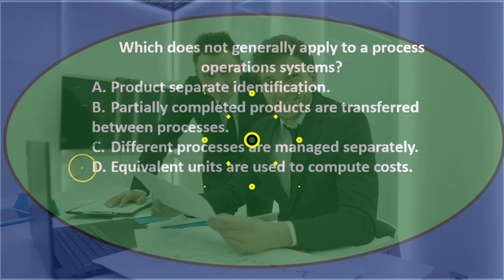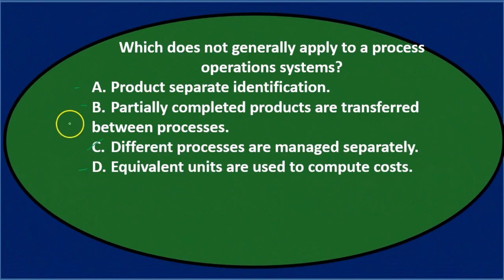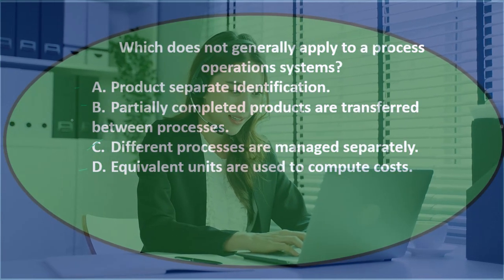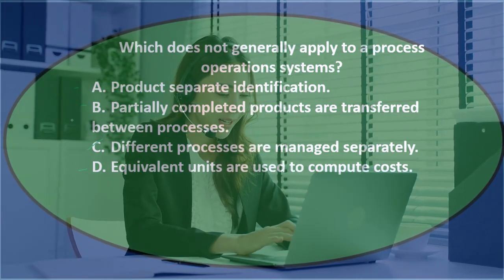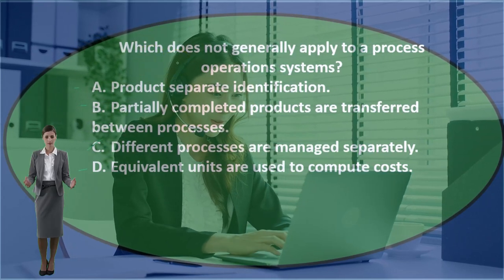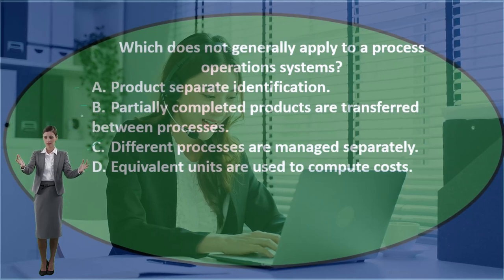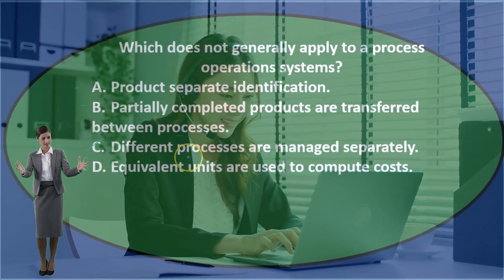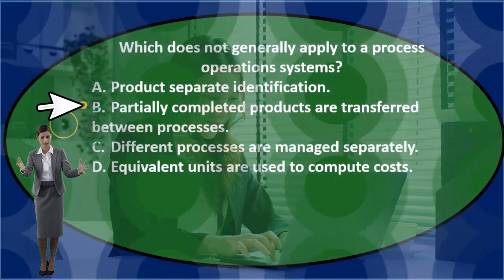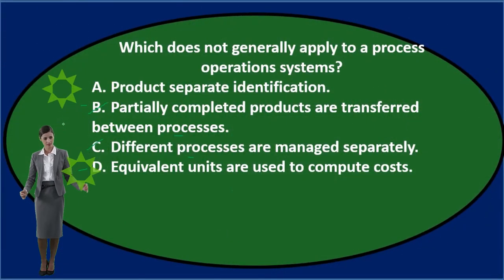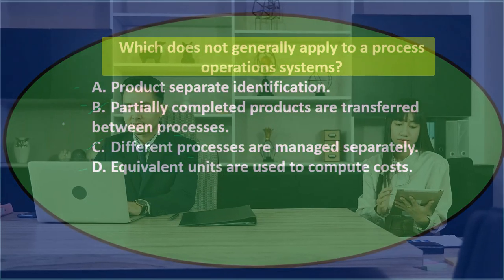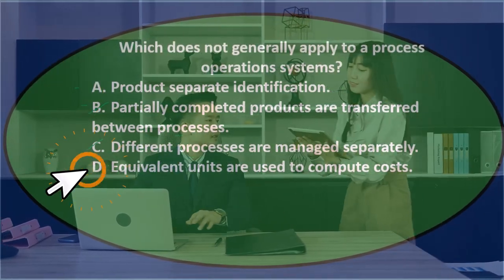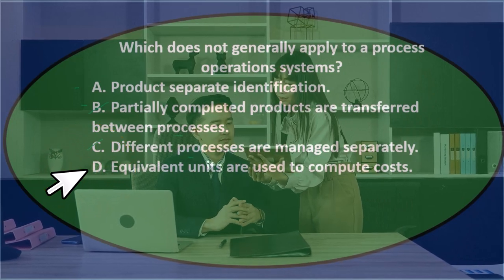Option D — equivalent units are used to compute costs. We might not know what an equivalent unit is, so I'll keep that one. Going back to B — partially completed products are transferred between processes — the focus is on the process, so that does apply to a process cost system. That leaves us deciding between A and D: which does NOT generally apply to a process operations system?